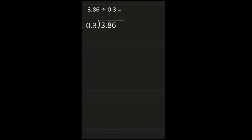For our fourth example we have 3 and 86 hundredths divided by 3 tenths. The 3 and 86 hundredths goes on the inside; 3 tenths on the outside. My first step is to move the decimal in the divisor one place to the right to get a whole number divisor, and move the decimal in the dividend one place to the right as well. Rewriting, I have 38 and 6 tenths divided by 3. I bring the decimal straight up, then start dividing: 3 divided by 3 is 1, so 1 goes over the 3. 1 times 3 is 3, and 3 minus 3 is 0.